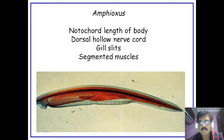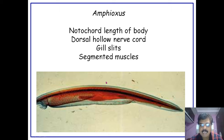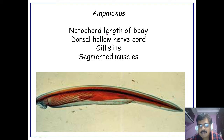Hello everyone, today we will discuss the external morphology of Amphioxus. Amphioxus is included under the cephalochordata and is a small fish-like or eel-like animal. The notochord runs throughout the length of the body, starting from the head region up to the tail region.